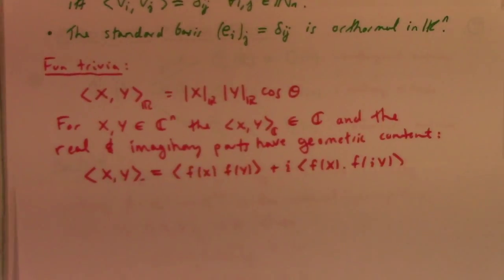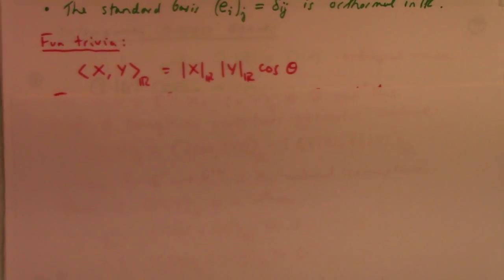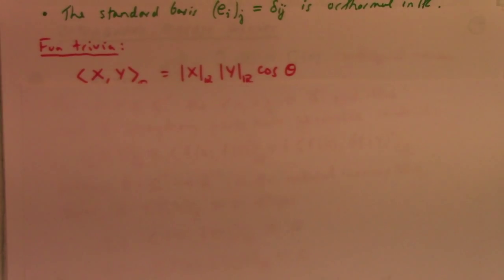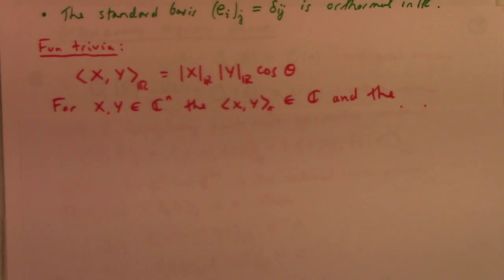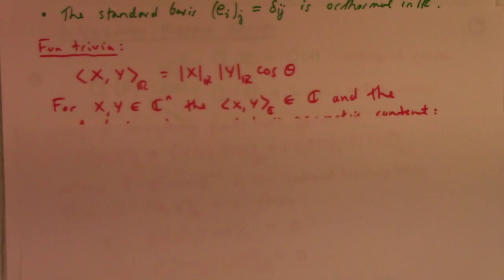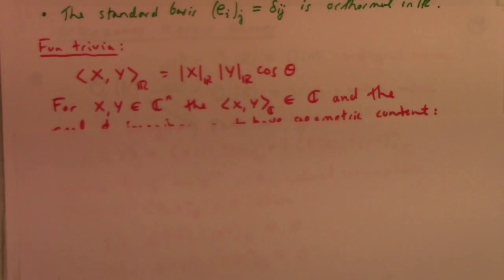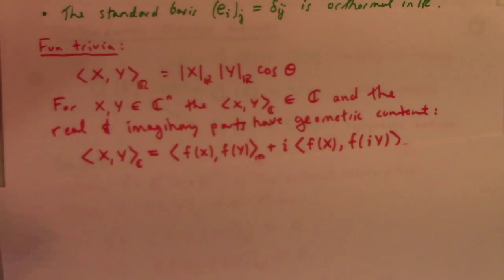Here's some fun trivia. Over the reals, the inner product reveals the cosine of the angle between the vectors, if they're non-zero. If one of the vectors is zero, you can't say anything about the angle — what is the angle of the zero vector? For x and y in C^N, the inner product has geometric content as well.